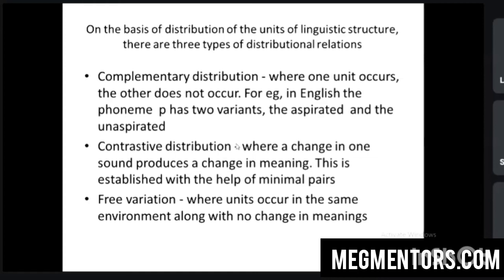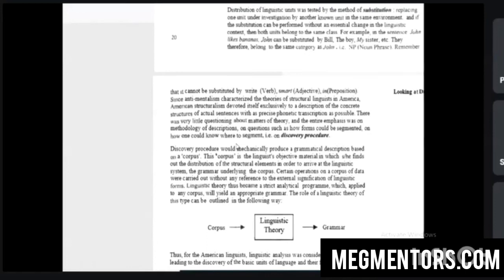Based on the linguist's objective, they will come up with a linguistic theory, and that linguistic theory will lay down the rules for the language, which will act as the grammar for the system. This is the purpose of a linguist. Using discovery procedure, you can generate grammar for a language: first you need an objective, then based on that objective you form a linguistic theory, and through that theory you generate grammar.